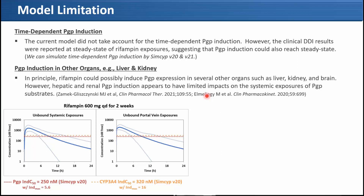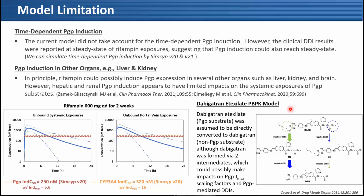Third, the dabigatran etexilate PBPK model limitation: dabigatran etexilate is a prodrug and P-gp substrate, while active dabigatran is not a P-gp substrate. Dabigatran is formed from dabigatran etexilate through two intermediates, with biotransformation taking place in the intestine. In our modeling approach, we assumed dabigatran is formed directly from dabigatran etexilate, ignoring these intermediates due to lack of information. This may be one possible reason why we needed such a high P-gp scaling factor of 55 to recover clinical PK data.